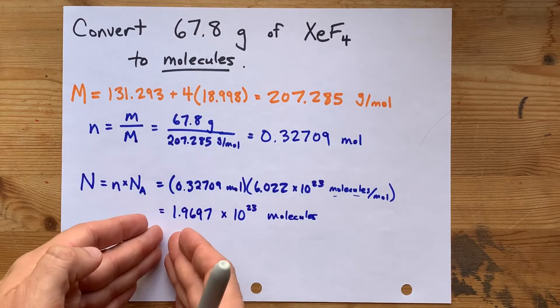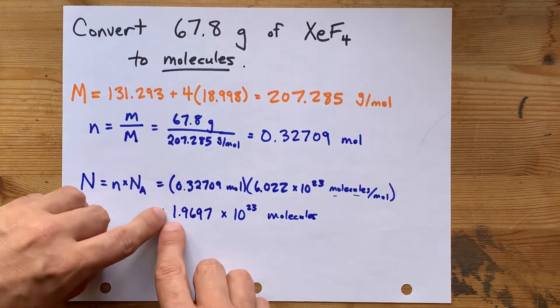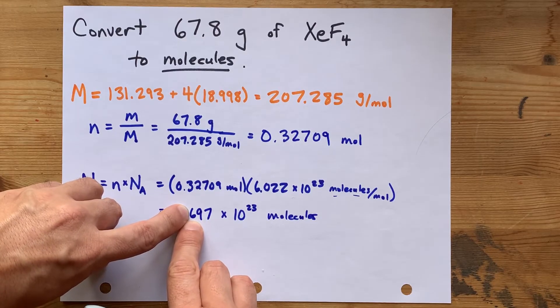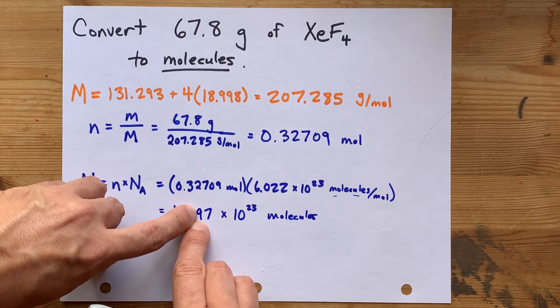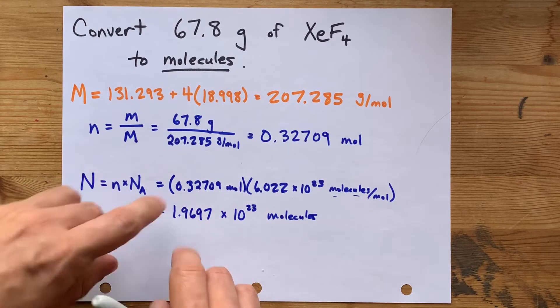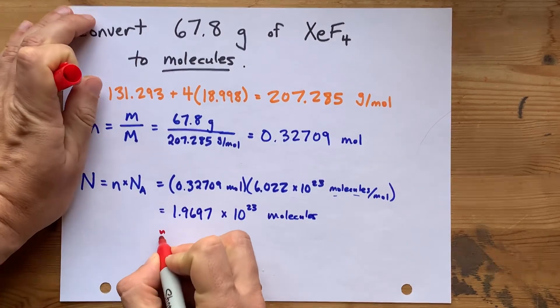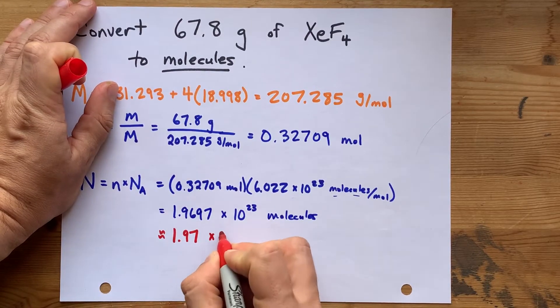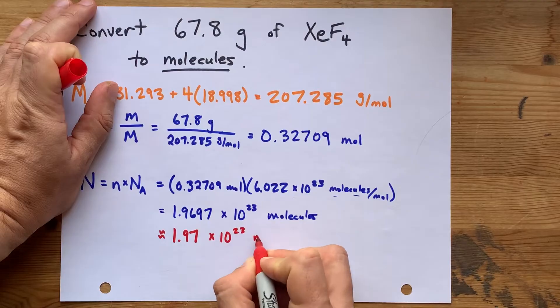So, I need to chop this down to three significant figures. One, two, three. That's the third one. I'm going to look at the number that comes after it. It's bigger than five. So, this number has to get rounded up. What that means is that my final answer is 1.97 times 10 to the power of 23 molecules.